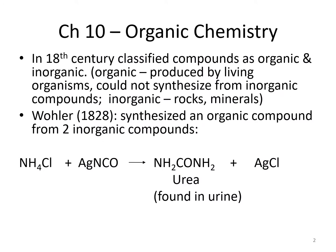Chapter 10 is on organic chemistry. We're going to start with the historical definition of organic chemistry. In the 18th century, compounds were classified as organic if they were produced by living organisms — meaning you could not synthesize them from anything that was not living. Inorganic compounds are compounds not made by living organisms; for example, rocks and minerals.